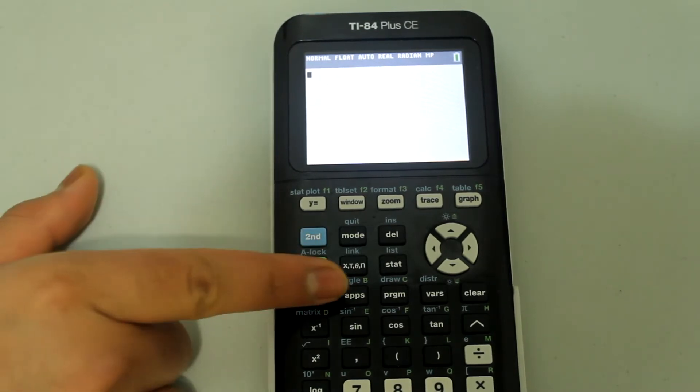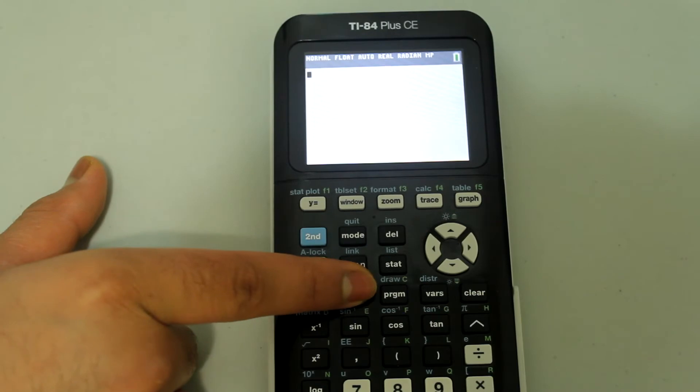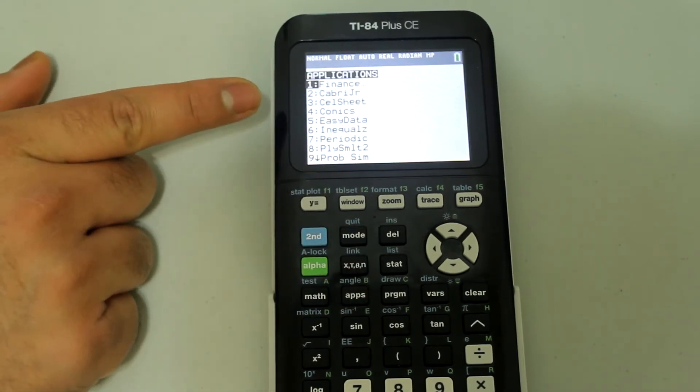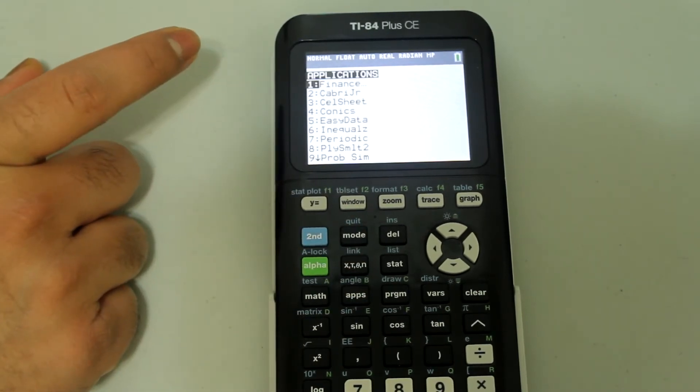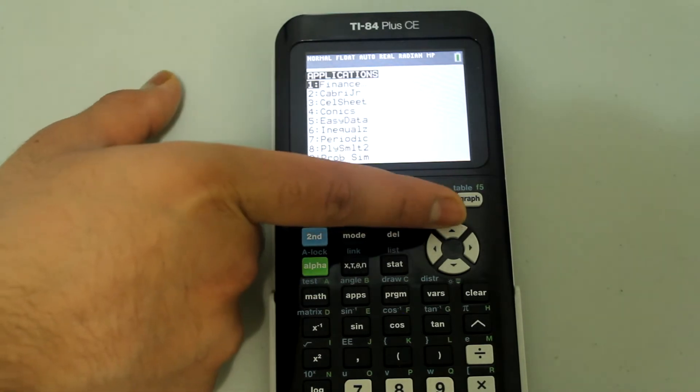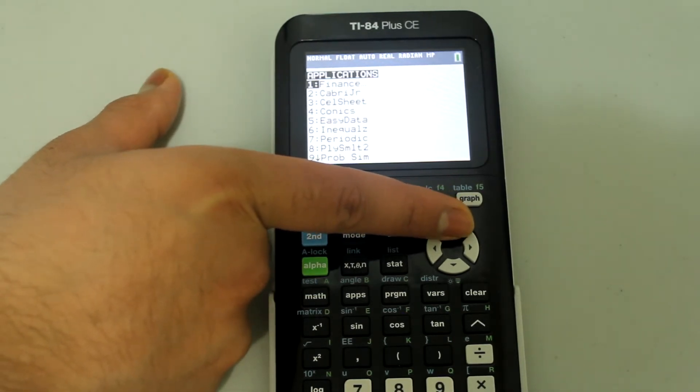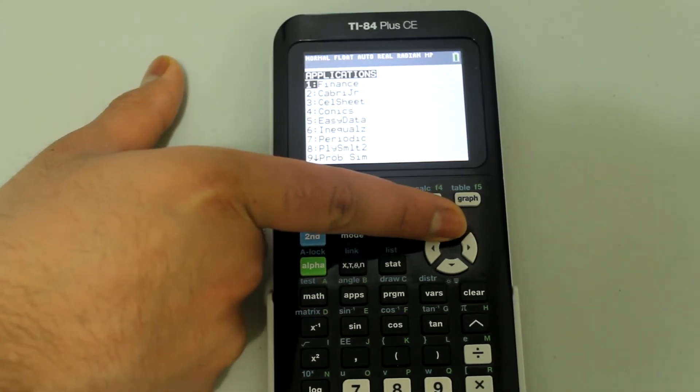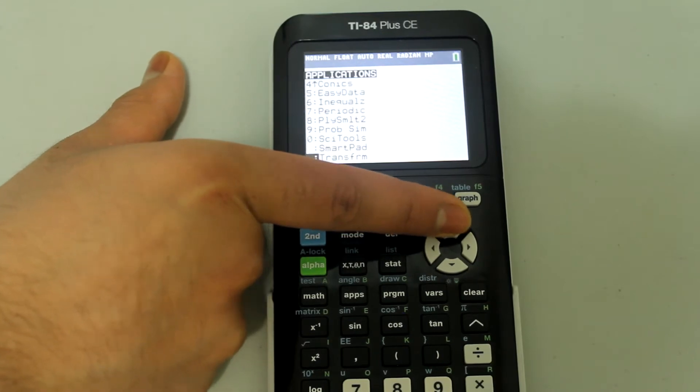First you want to press the button labeled apps and that takes you to a screen that looks like this. After that, you want to use the up arrow because the feature we're interested in is further down the list, so you want to scroll in reverse.